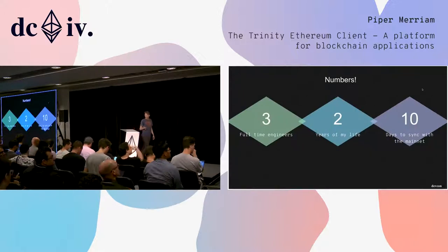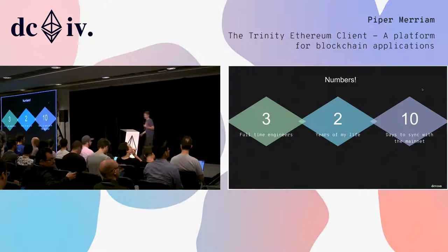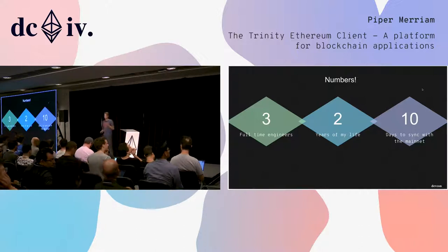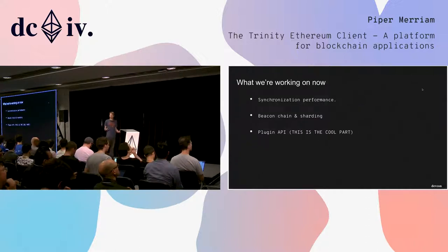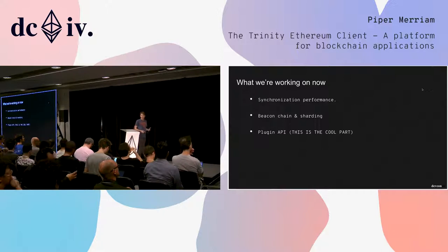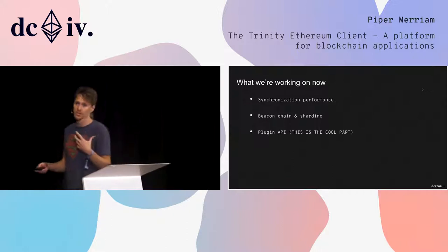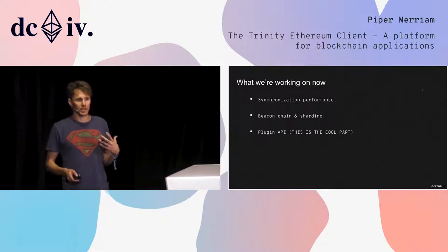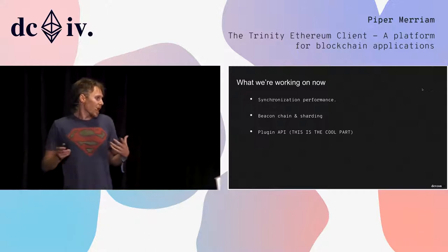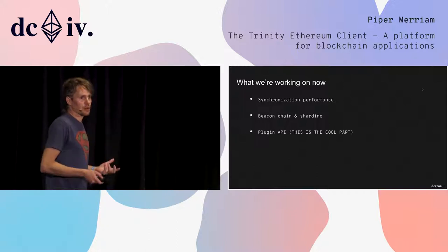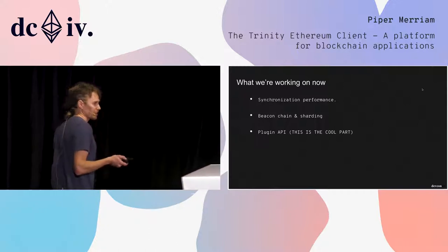Here's some numbers. We've got three full-time engineers on the project. I have put two years of my life into this, and it takes about ten or more days to sync with the network, which is slow. Right now we're working on a couple of things. Main efforts are on making synchronization faster. The research team from Taipei is working on implementation of the beacon chain in our base EVM library, and today I want to talk to you about our plugin API.